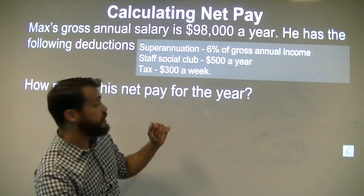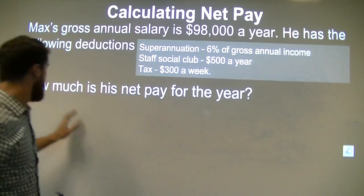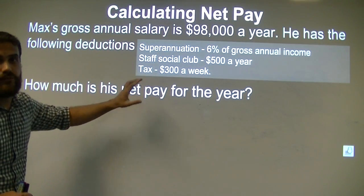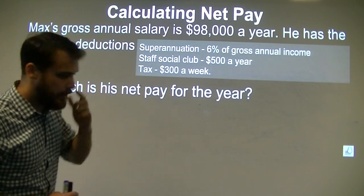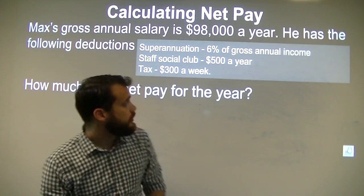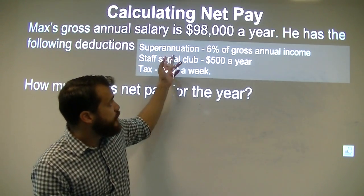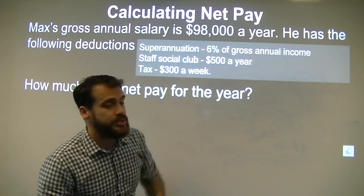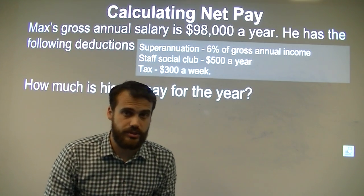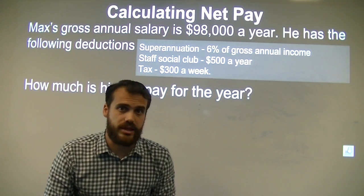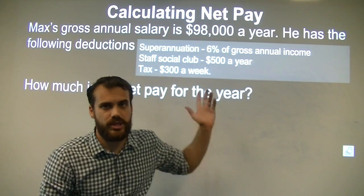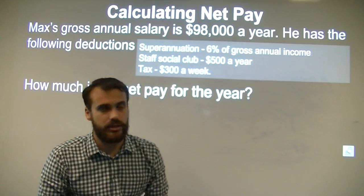So the question is, how much is his net pay for the year? There are a couple of little problems here. Superannuation is 6% of his gross annual income — we don't know what the dollar value of that is yet. We need to calculate what the dollar value is; we just know it as a percentage right now.